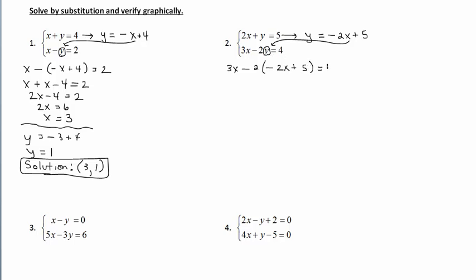Replacing y with (negative 2x plus 5) in the bottom equation: 3x minus 2 times (negative 2x plus 5) equals 4. Distributing the negative 2: negative times negative gives positive 4x, and negative 2 times 5 gives minus 10. Combining the x terms gives 7x minus 10 equals 4. Adding 10 to both sides and dividing by 7 gives x equals 2.